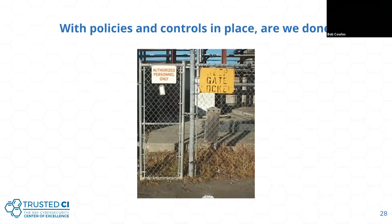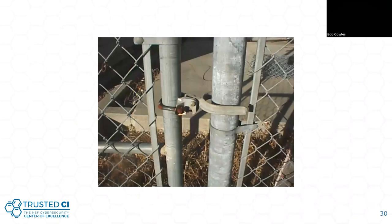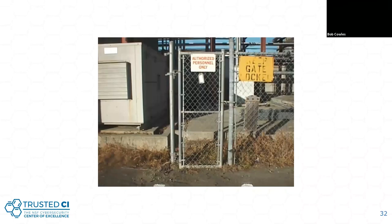So once you have all of these things in place, the question is: are we done? We've got a procedure that says make sure you keep the gate locked. Well, there's a small problem with that — there's no lock on the gate. And we have a policy that says 'authorized personnel only.' Small problem: there is a lack of a way to make sure that only authorized personnel get in there.